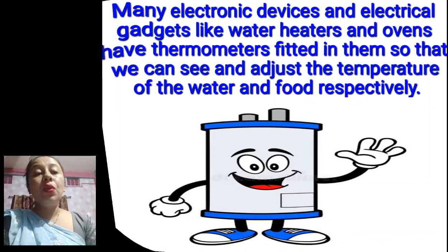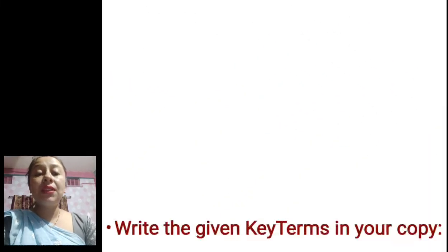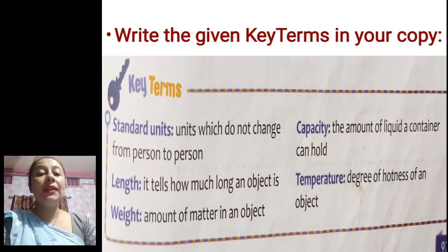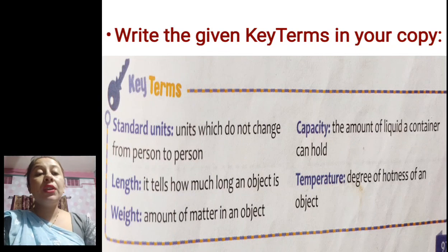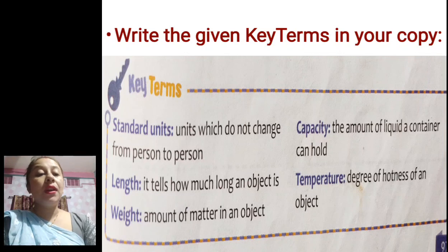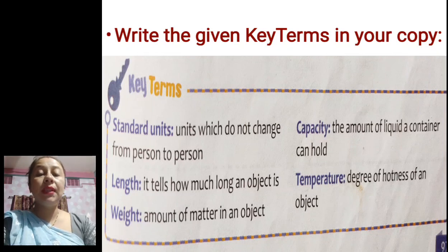Hope whatever we covered in today's class is clear to you all. This is your home assignment — write the key terms: Standard units are units which do not change from person to person. Length tells us how long an object is. Weight is the amount of matter in an object. Capacity is the amount of liquid a container can hold. Temperature is the degree of hotness of an object.